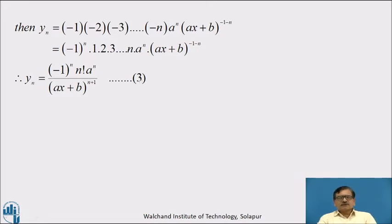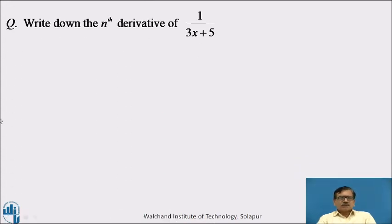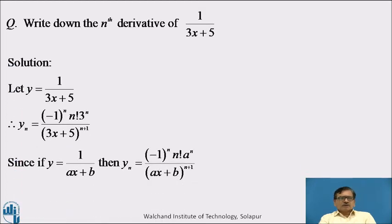These are the three different formulae for finding the nth derivative of an algebraic function. Now, pause the video and write down the nth derivative of 1/(3x + 5). The answer is: let y = 1/(3x + 5), therefore yₙ = (−1)^n · n! · 3ⁿ / (3x + 5)^(n+1).